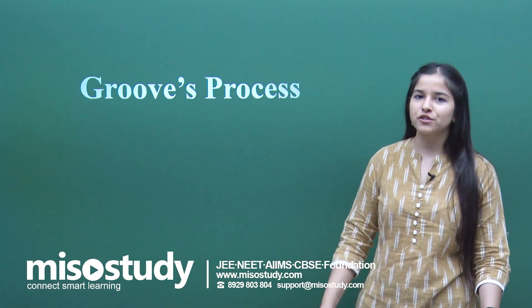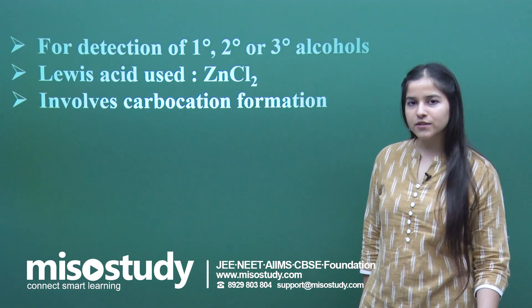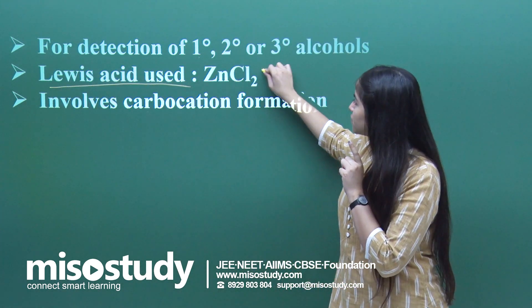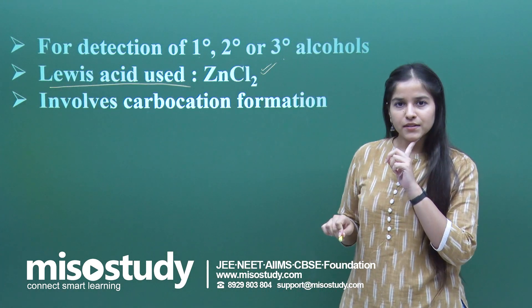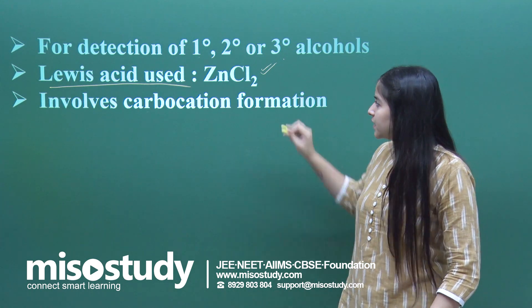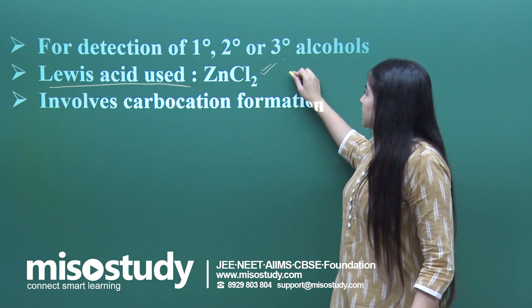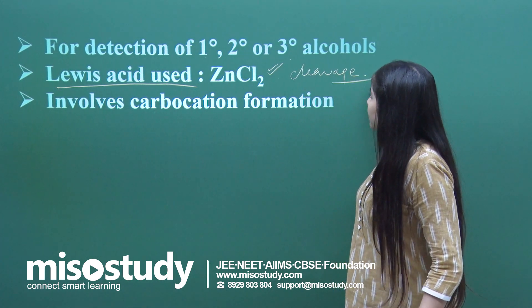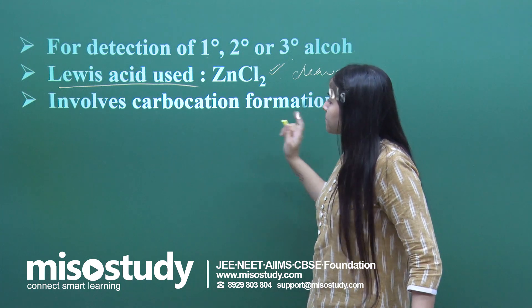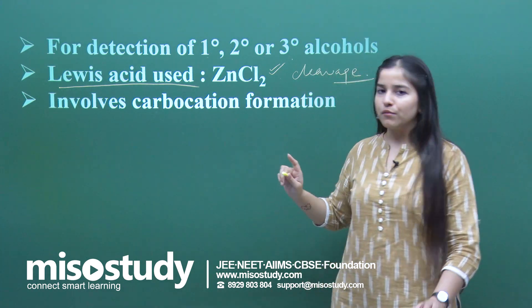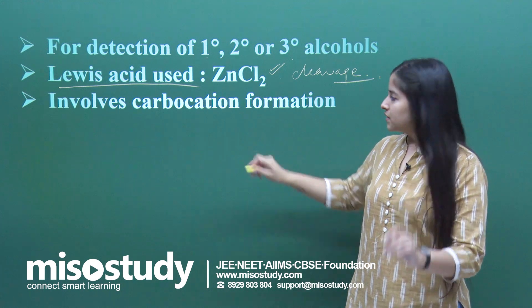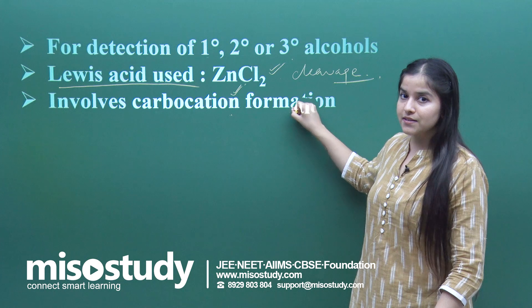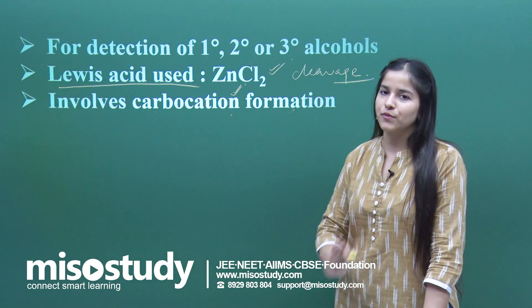The Groves process first of all involves a Lewis acid as the main reagent. The Lewis acid used here is zinc chloride (ZnCl₂). It is very helpful in the cleavage of a specific bond. It involves the formation of carbocations — once you understand the role of carbocation formation in this reaction, you will grasp the entire process very quickly.